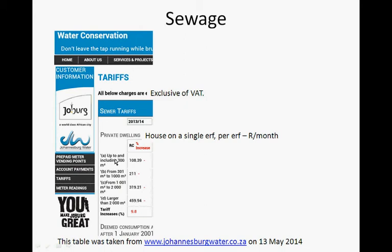The first amount is up to and including 300 square meters. If you have a property smaller than 300 square meters, you will pay R108.39 per month for sewage. If your property is between 301 and 1000 square meters, you pay R211 per month. Between 1001 and 2000 square meters, you pay R309.21 per month.